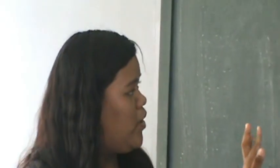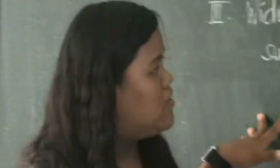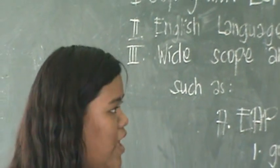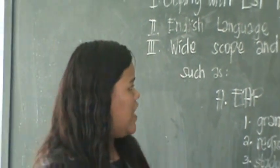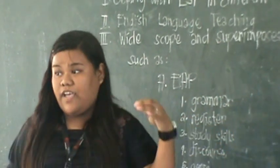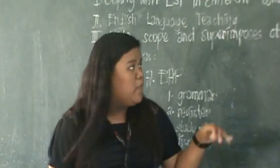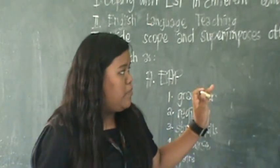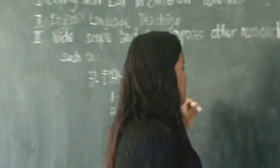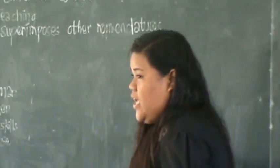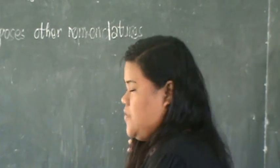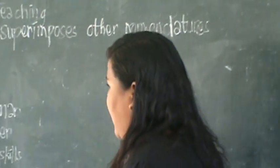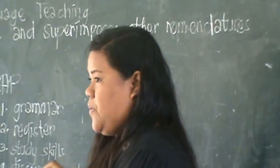We are now in a wide scope, and so there are other nomenclatures. When you say 'so far,' we say it is on the top. When you say nomenclatures, it is a set or a list of names, such as EAP.